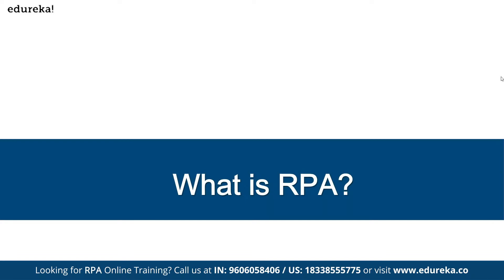Since in the IT industry we work on a software platform, the step-by-step activities we are doing on a particular software — we have to automate that. We need another software to do the automation. That is the reason why your robot is a software. So putting it all together: robotic process automation is the use of software which mimics your step-by-step activities — whatever the human is doing — and completes that without your involvement. That is said to be RPA.